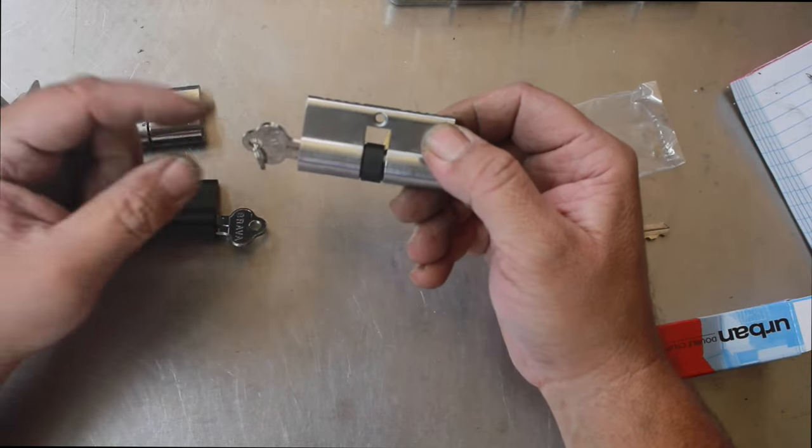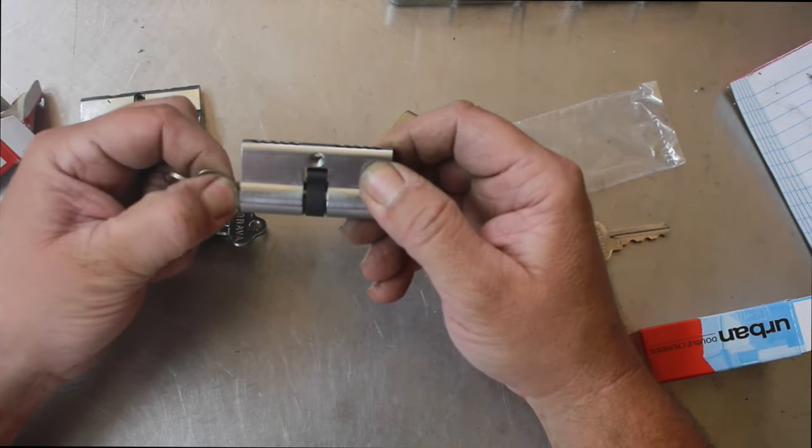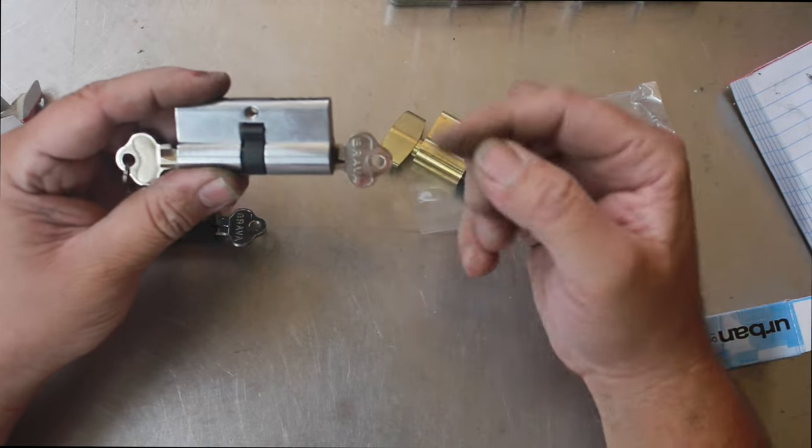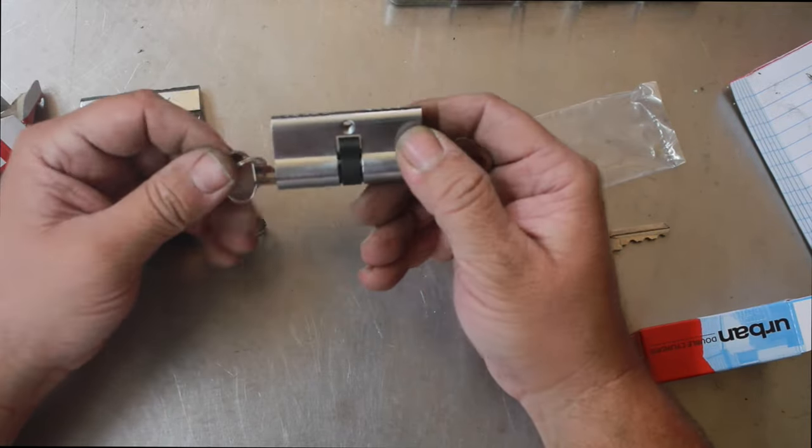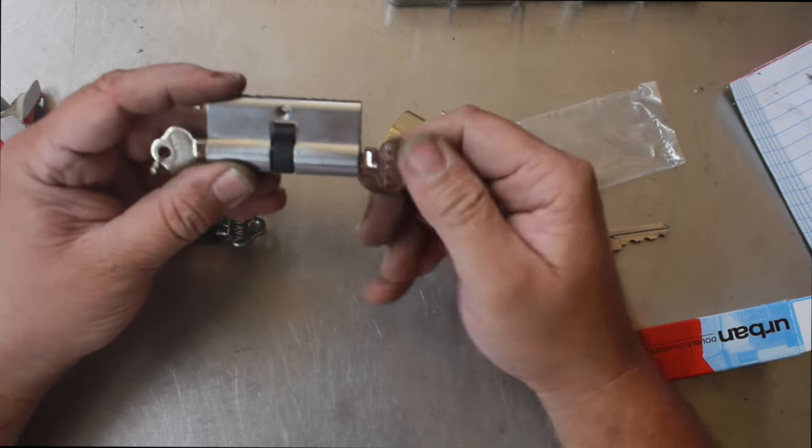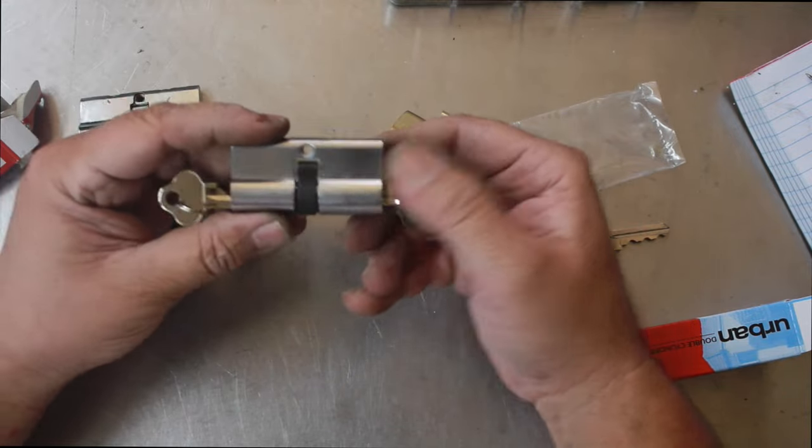What will need to happen is the person on the inside would need to rotate this, pull the key out, allowing the outside key to be able to go in and start to drive the lock. So you can't have two keys driving the lock at the same time. That one won't go in, if I pull this one out, this one will go in.